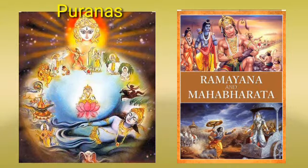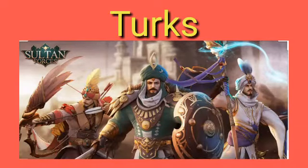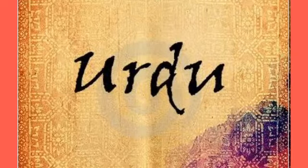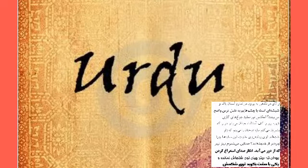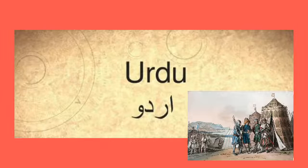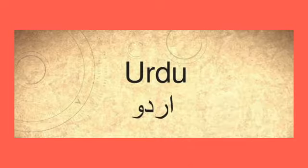The Puranas, the Ramayana, and the Mahabharata came to be translated in different regional languages. The Turks introduced Persian into India, and it became the language of administration. Much later, Persian and Hindi fused to give birth to a new language, i.e. Urdu. Urdu means camp. It was called the camp language because it evolved and developed in the camps of soldiers. Urdu developed as a link language which was spoken and understood by all.